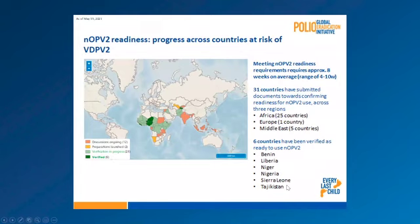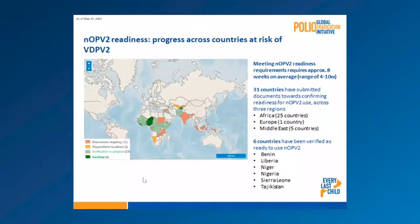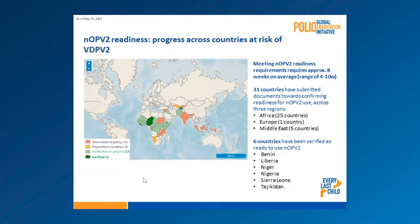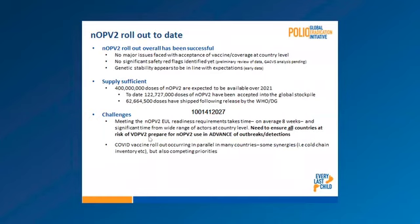Thirty-one countries are preparing — 25 in Africa, one in Europe, and five in the Middle East. Six countries are verified and almost all have started their campaigns, with the exception of Niger. Benin and Liberia have done two rounds, Nigeria has done two rounds, Sierra Leone has done one round, and Tajikistan is in their first round as we speak. The preparation and readiness process is a rather tedious and lengthy one.